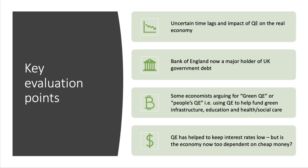Some economists are saying that ten years on from the first generation of QE, perhaps we should be more imaginative. Instead of the Bank of England just buying existing government bonds off banks and pension funds, perhaps we could move to green QE or people's QE — where the Bank of England could fund green and infrastructure projects, big state investments in education and social housing, and ramping up investment in health and social care. Perhaps QE can be used for a social purpose and an environmental purpose, especially given the pressing nature of climate challenges.